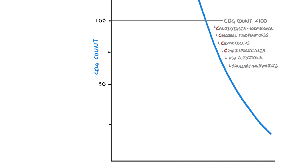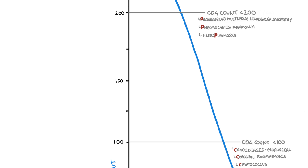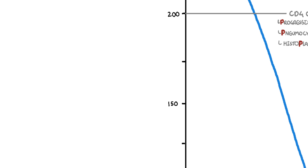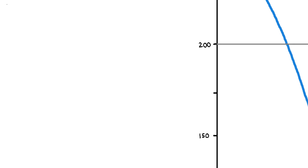Finally, there are infections or malignancies that occur with a CD4 cell count less than 50, and there are only three to remember, which will be touched on at the end of the video. Let's first focus on the AIDS defining conditions that occur with a CD4 cell count of less than 200 cells per microliter.